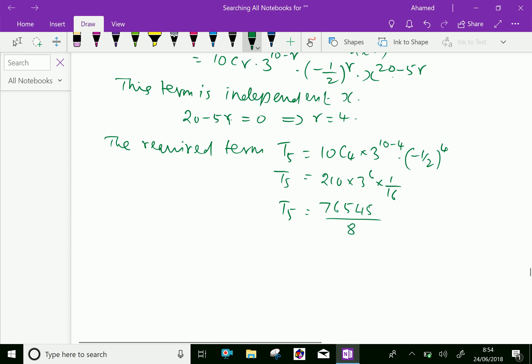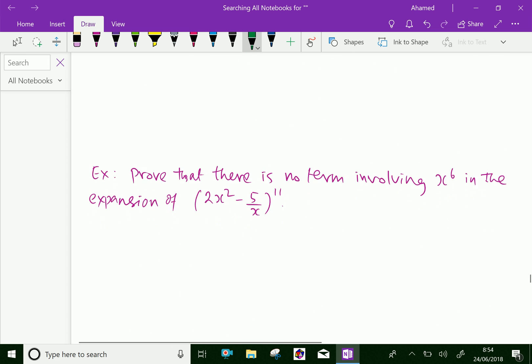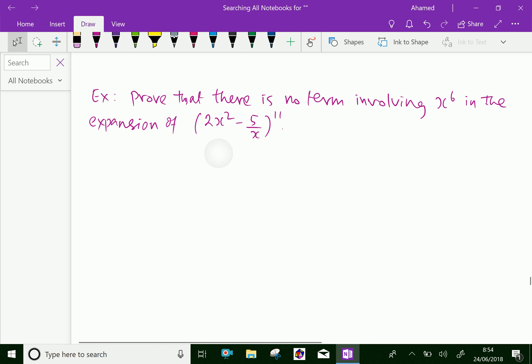This is the term which is independent of x. Let us do one more problem. Prove that there is no term involving x^6 in the expansion of (2x² - 5/x)^11.